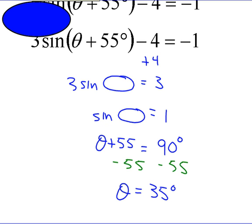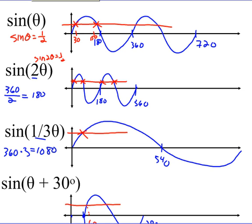It's always a good idea to check for another answer — another answer is always one period away. One period away gives the same y-value; that's why it's periodic. If I added 360, I'd be way too big, so 35° is my one and only answer from 0 to 360. There are infinitely many more answers overall, but for today's lesson we're focused on 0 to 360.